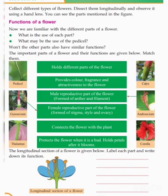Turn to page number 32. Collect different types of flowers, dissect them longitudinally and observe using a hand lens. You can see the parts mentioned in the figures.